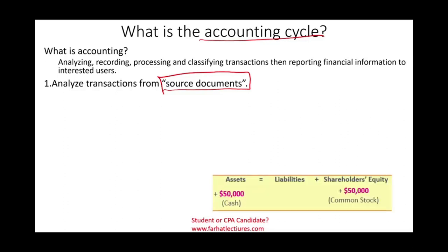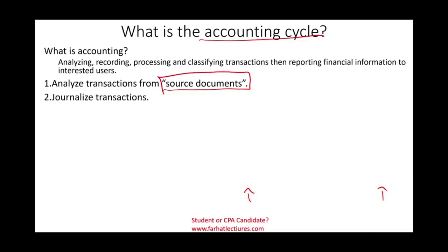For example, let's assume an investor invested fifty thousand dollars cash in the business. The source document might be a check or an email saying 'I'm transferring money from my personal account to the business bank account.' The point is we analyze the transaction by recognizing that cash went up and we issued common stock. That is the transaction we analyzed.